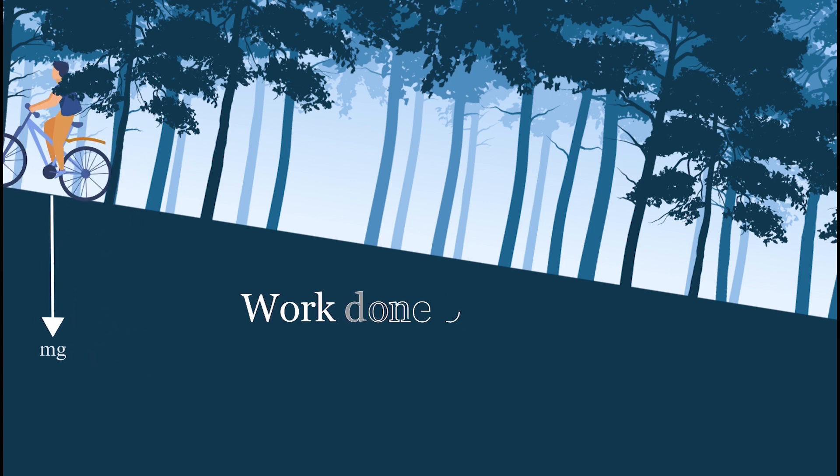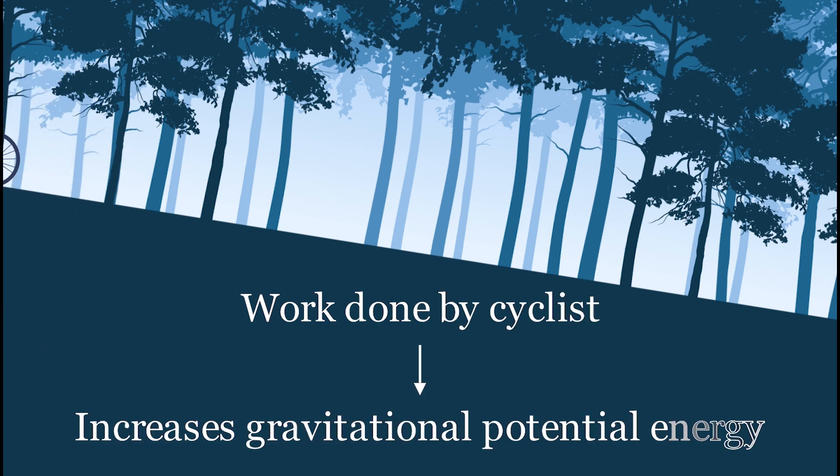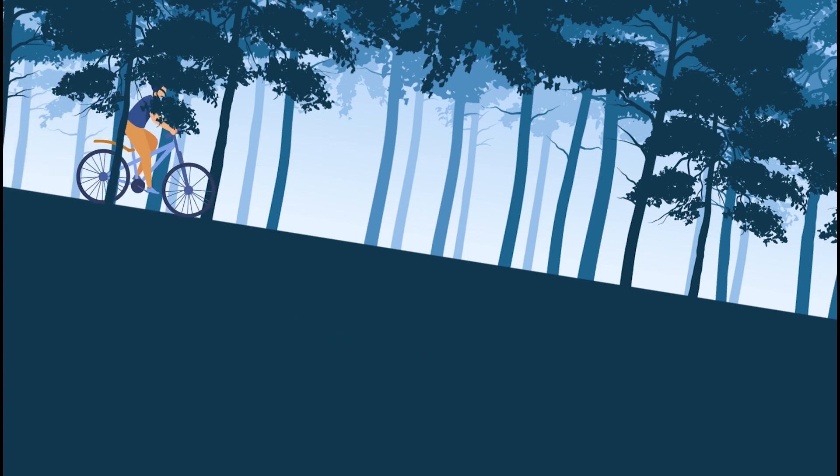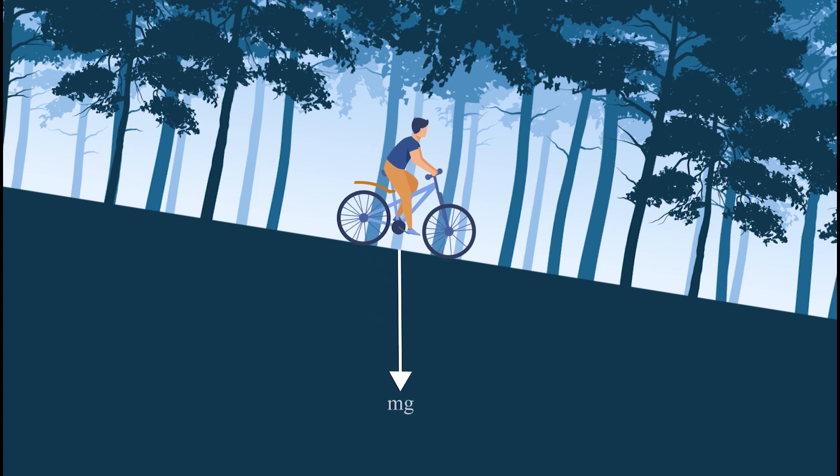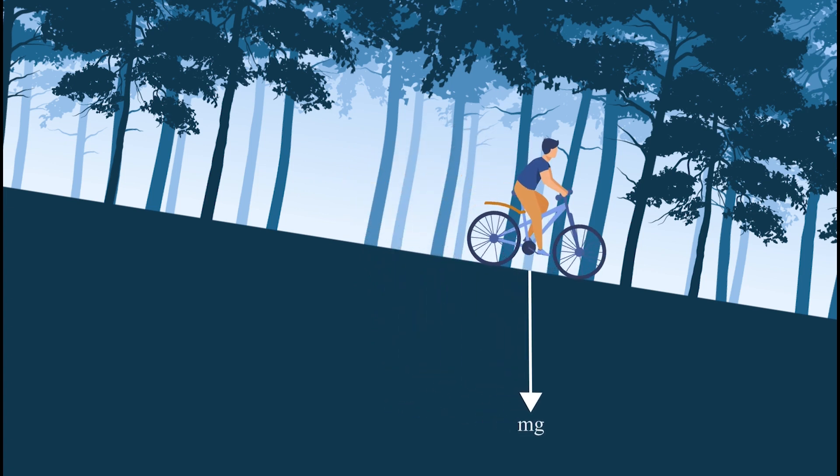Energy gets transferred to his stored potential energy. We can see this potential energy in action when he cycles down this hill. Now he won't need to pedal as gravity is doing the work converting his potential energy into speed or kinetic energy.